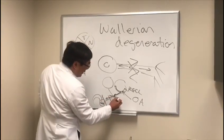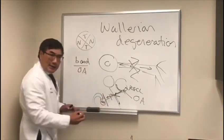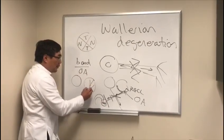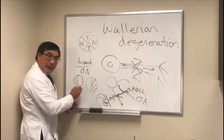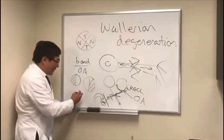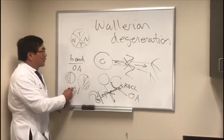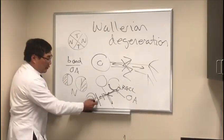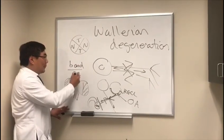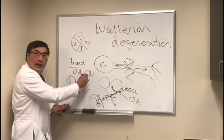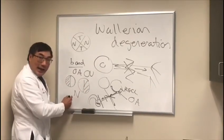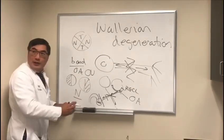If you watch the retinal nerve fiber layer video, you'll have that foundational knowledge. A lesion at the chiasm produces a bitemporal hemianopsia. Because that bitemporal hemianopsia results from nasal fiber involvement, and since we are in front of the geniculate body, atrophy will cause band optic atrophy in both eyes in a bitemporal hemianopsia pattern from a chiasmal lesion due to involvement of the nasal crossing fibers in both eyes.